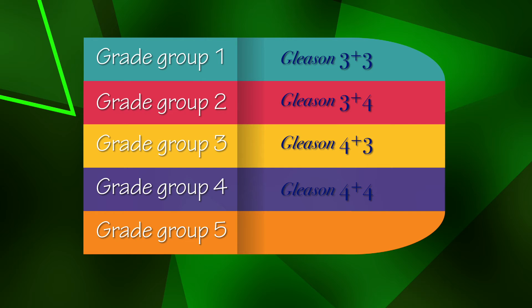Grade group 4 describes 4 plus 4, replacing Gleason score 8. The top group, grade group 5, contains any 5: 4 plus 5, 5 plus 4, 5 plus 5, and replaces Gleason score 9 and Gleason score 10.